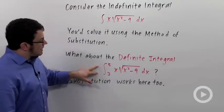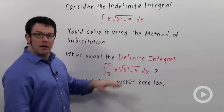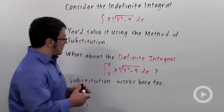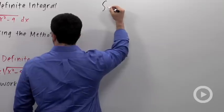But how would you solve the definite integral from 3 to 5, same integrand? It turns out that you can use the method of substitution for a definite integral as well. I want to show you how to do that. So let's copy this down.